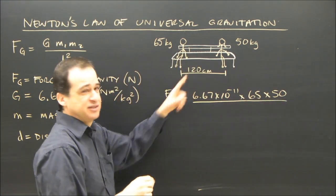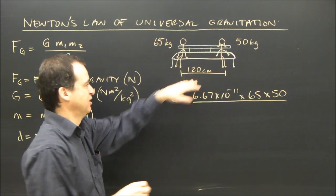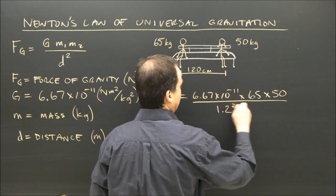Divided by the distance between them squared. But this has got to be in meters, not centimeters. So I changed it to 1.2 and there's a square in there.